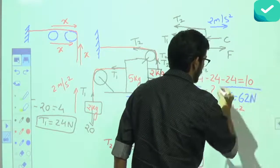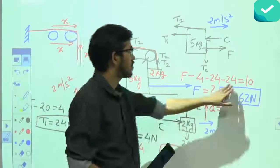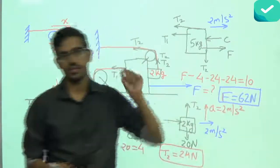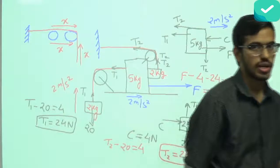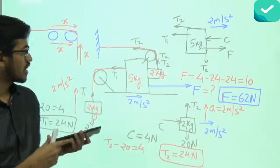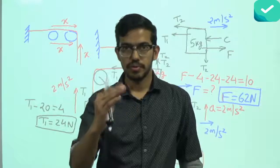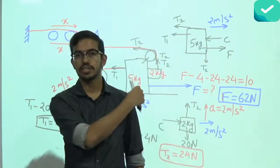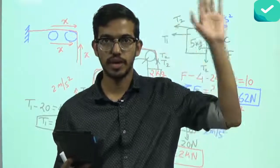Final answer: force F = 62 Newtons. This one problem can clear all your Newton's laws of motion concepts. We'll meet next time on Friday — keep watching the classroom tab for upcoming lectures, including a lecture on Monday. Next lecture will cover pseudo forces — be ready for that. See you all next time, good night, bye bye.